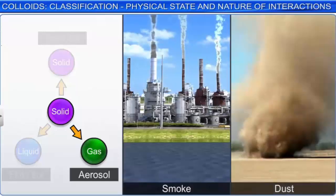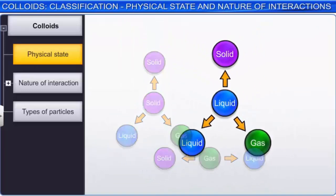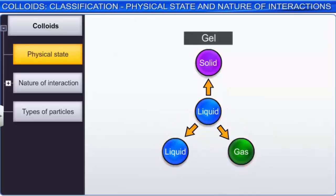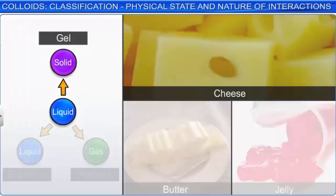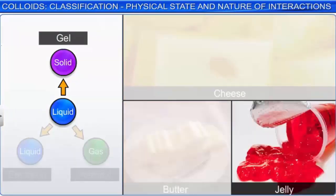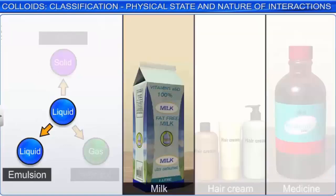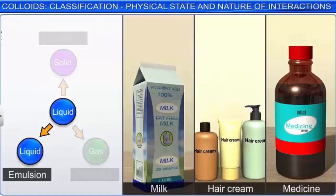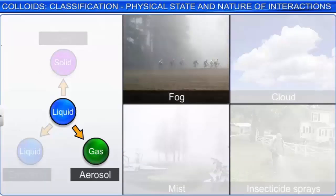Dispersion of a liquid in a solid, liquid, or gas dispersion medium results in the formation of a gel, emulsion, and an aerosol respectively. Examples of gels are cheese, butter, and jellies. Milk, hair cream, and certain medicines are examples of emulsions. Fog, cloud, mist, and insecticide sprays are examples of aerosols.